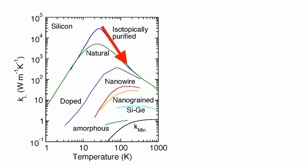But as we increase the temperature, Umklapp scattering really just takes over, and both the natural and purified silicon converge together. But we see that the purified and natural silicon also have similar values for low temperature as well. Why is that?